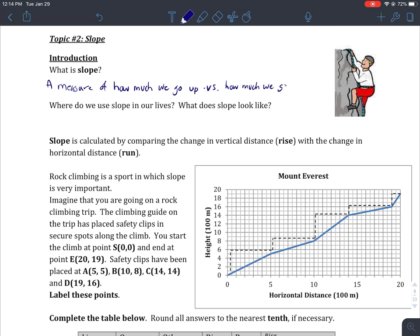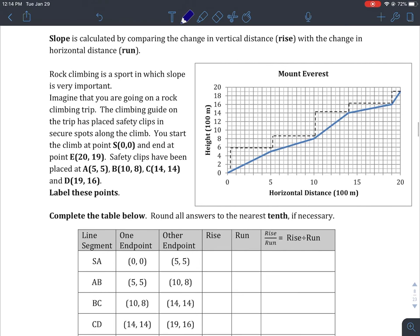We are going to create a fraction or a comparison between the rise and the run. You can see slope everywhere - we use it in wheelchair ramps, inclines, driving on a hill, skiing, snowboarding. It's calculated by comparing the change in vertical distance, which is the rise, with the change in horizontal distance, which is the run.